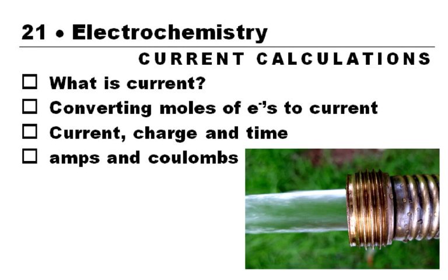When we are doing calculations for electrochemistry, especially about electrolysis, sometimes we want to deal with the current, and we want to be able to convert moles of electrons into coulombs, into charge. And then how does the current and the charge and time relate to each other? And then the units here, amps and coulombs.